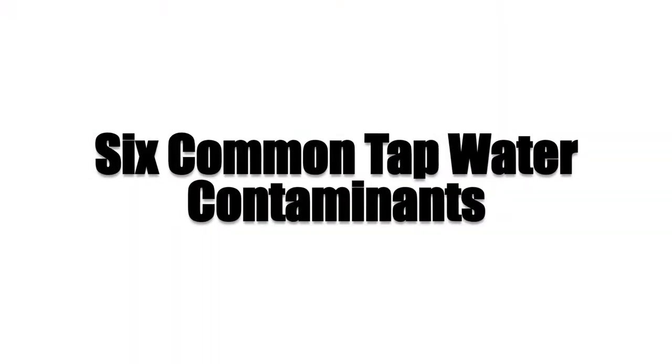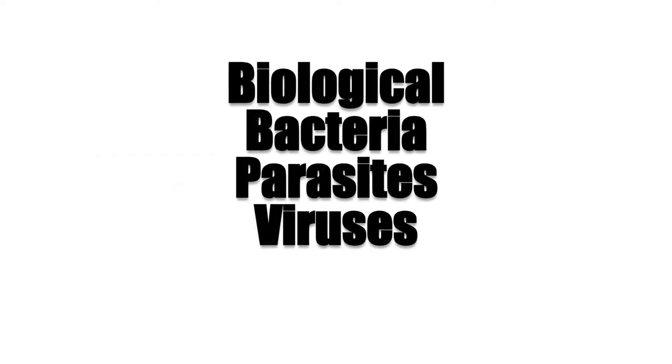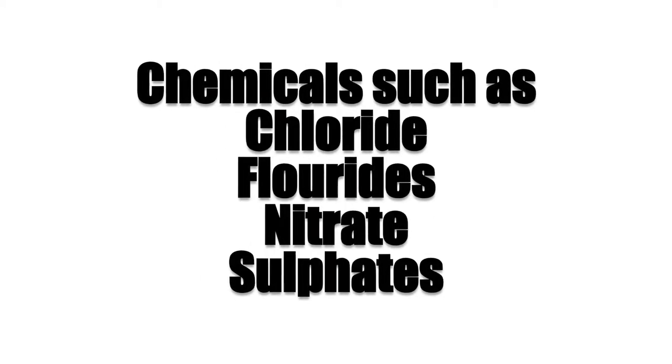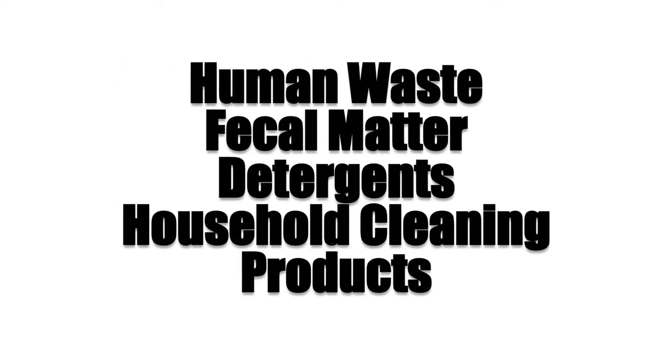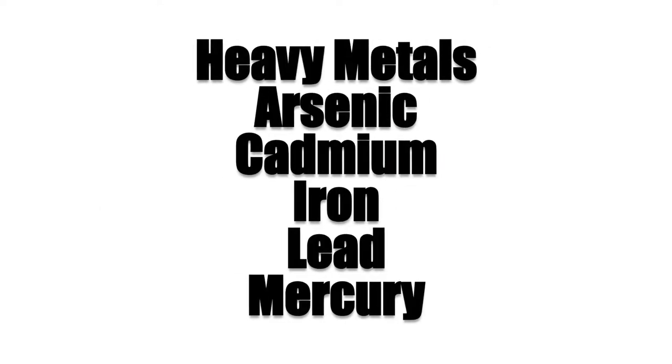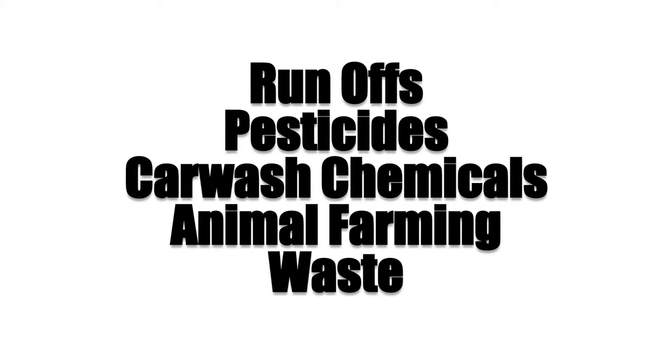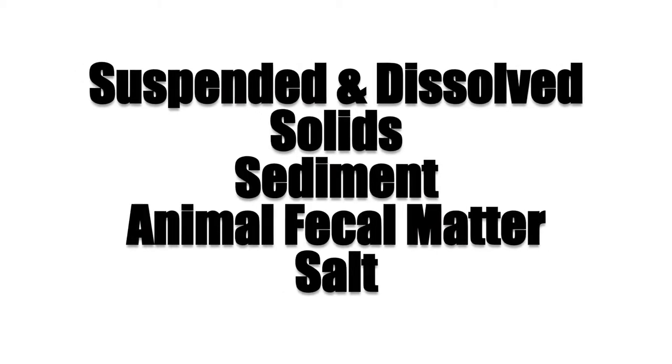Six contaminants found in our water supply include: biological contaminants such as bacteria, parasites and viruses; chemical waste such as chloride, fluoride, nitrate and sulphates; human waste such as fecal matter and detergents; heavy metals such as arsenic, cadmium, iron, lead and mercury; runoffs such as pesticides and car wash chemicals; and suspended solids and total dissolved solids such as sediment, animal fecal matter and salts.